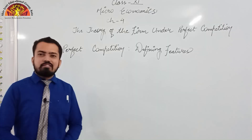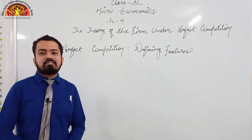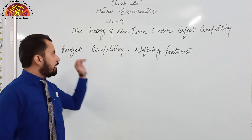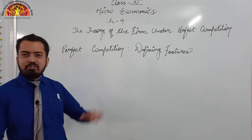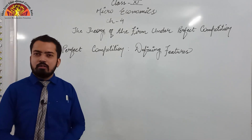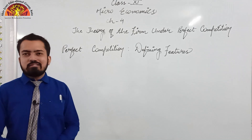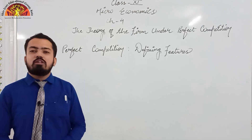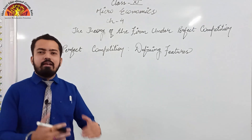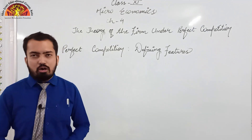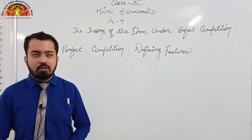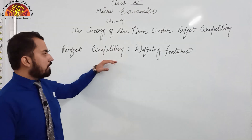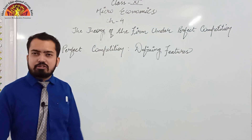So dear students, in this chapter we will be discussing 3 major points. The first is related to perfect competition market. Second is related to revenue. Third is supply and then elasticity of supply. So at first let's begin with perfect competition market.